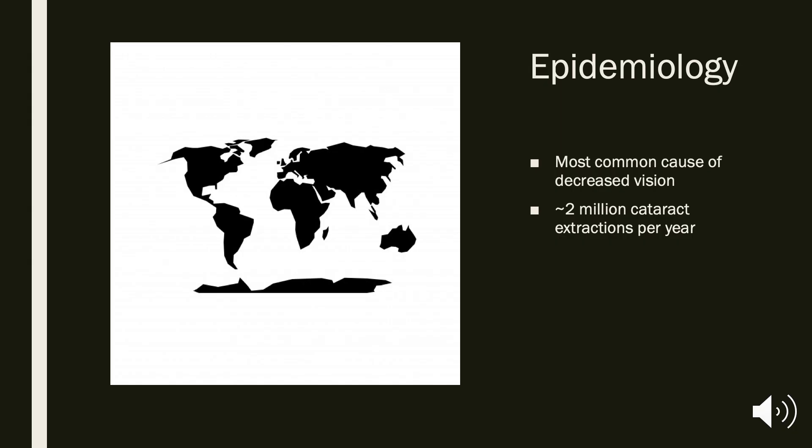Although some degree of cataract formation is expected over the age of 70 due to the natural aging process of the lens, cataracts are the most common cause of decreased vision that's not correctable with glasses worldwide. Cataract surgery is one of the most common and successful surgeries, with approximately 2 million cataract extractions performed per year in the United States alone.